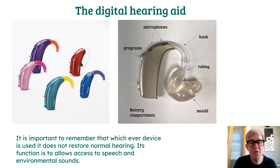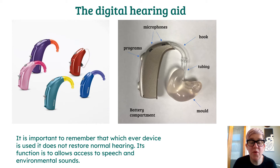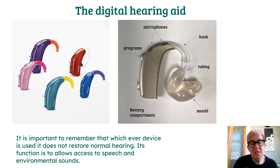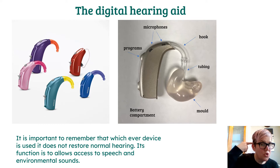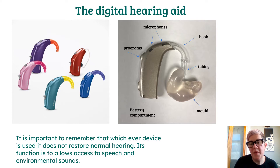We'll start with a digital hearing aid. This is the most common type of hearing aid prescribed by audiologists, and you are likely to come across these if you have any hearing impaired students in your classroom. These are called behind the ear type hearing aids because they sit behind your ear with the mould part going into your ear. If we look at the top here you'll see that there are two little microphones.